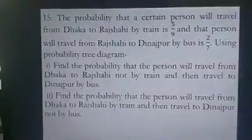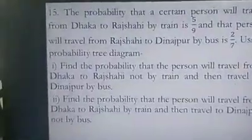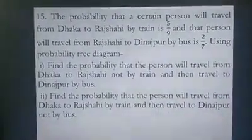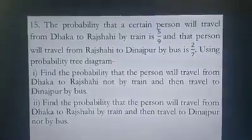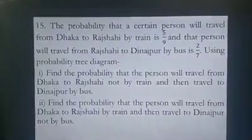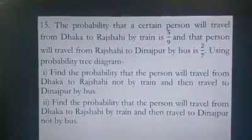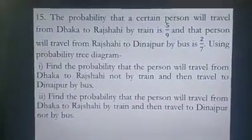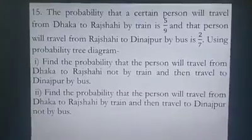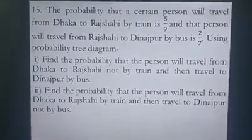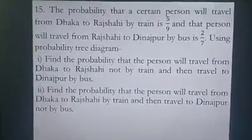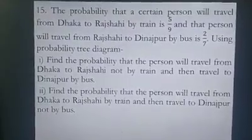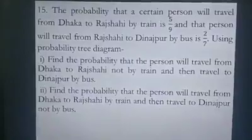Now let us go to problem number 15. The probability that a certain person will travel from Dhaka to Rajshahi by train is five-ninths, and that person will travel from Rajshahi to Dinajpur by bus is two-sevenths. Using a probability tree diagram, find the probability that the person will travel from Dhaka to Rajshahi not by train and then travel to Dinajpur by bus. Note: the probability of traveling by train is five-ninths.